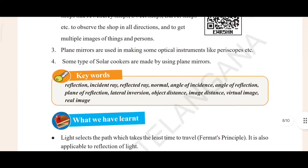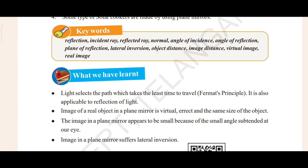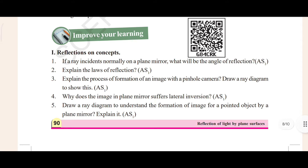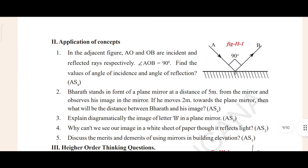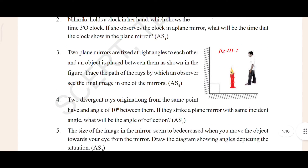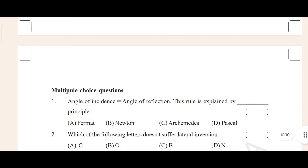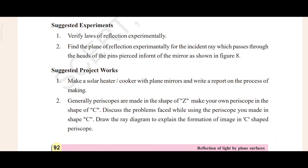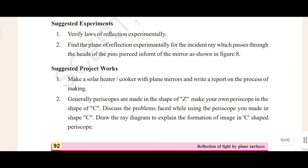So first of all, let's look at the keywords, then after we will see what we have learned — the key concepts. After that, here in 'Improve Your Learning': the first section is Reflection of Concept with five questions, then Application of Concept with five questions, then Higher Order Thinking with five questions, Multiple Choice Questions, Suggested Experiment, Project Work, and Think and Discuss. We will cover everything in this chapter.